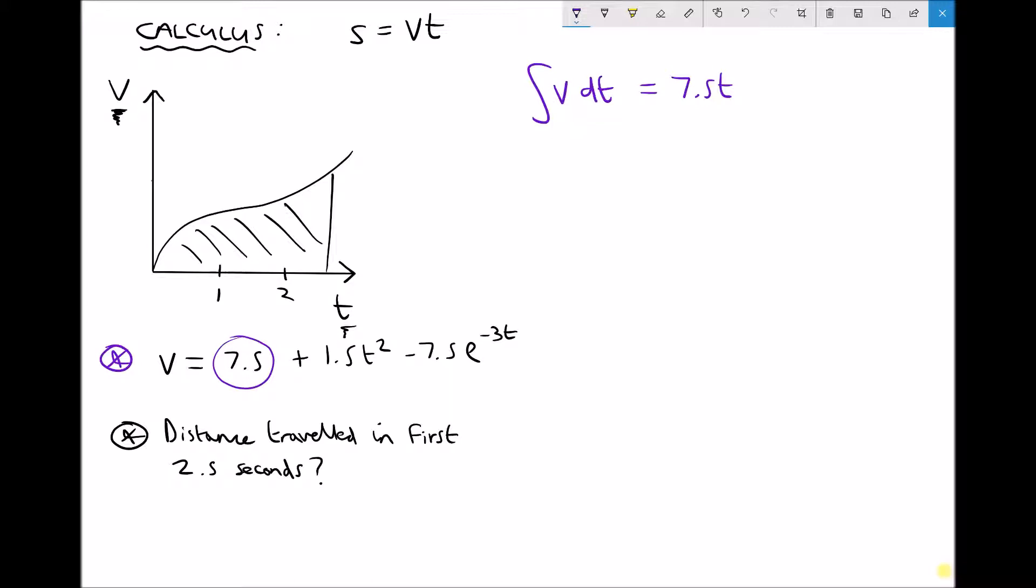You can check this because if you were to differentiate 7.5t to the 1, then it would return back to the 7.5 that we had before integration. Recall that differentiation and integration are the opposites of each other or the inverses of each other.